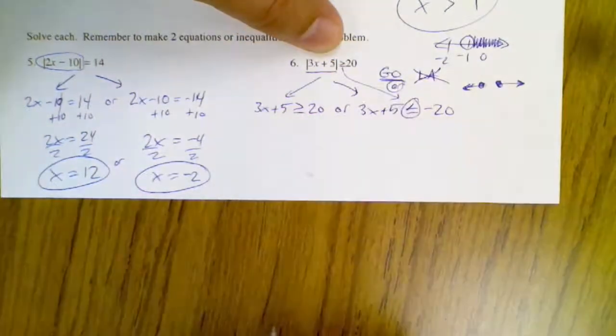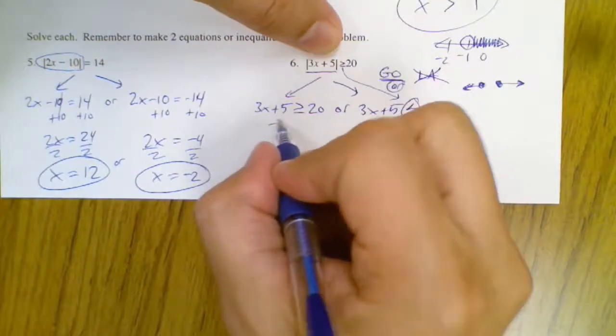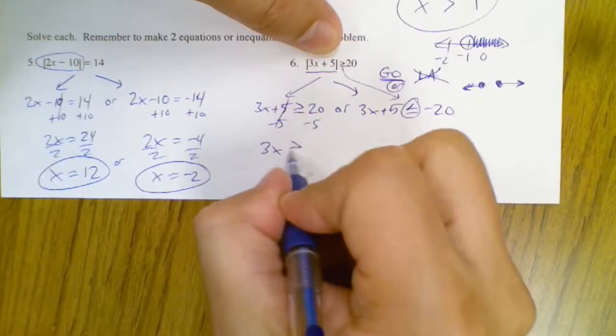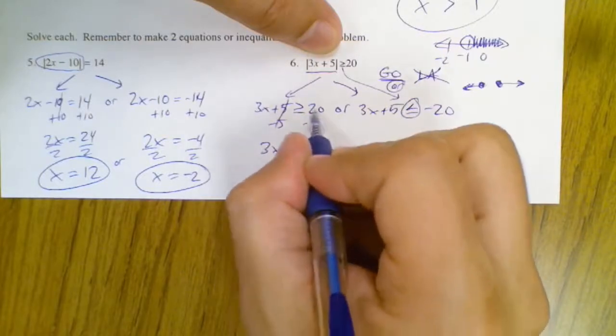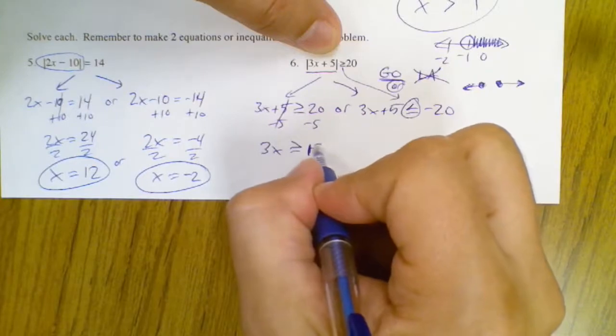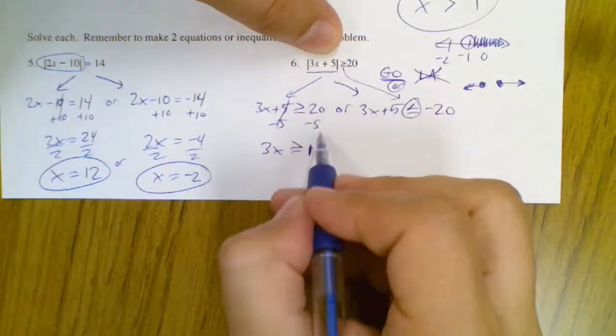And then I solve it just the same way. Take away 5, 3x is greater than or equal to 15, because they take away 5 from there. Then divide by 3 and you get x is greater than or equal to 5, or